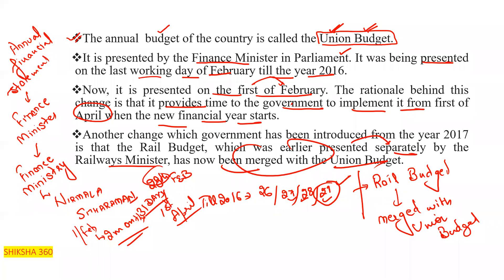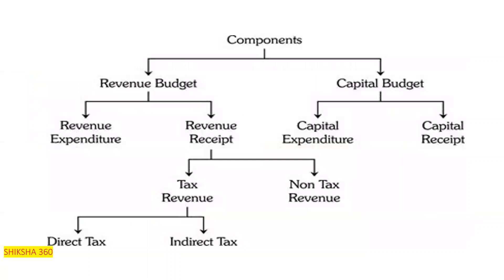Now let's discuss the components of the budget. The budget is divided into two parts: the Revenue Budget and the Capital Budget. Under the Revenue Budget, we have either revenue expenditure or revenue receipts — that is, spending or earning.